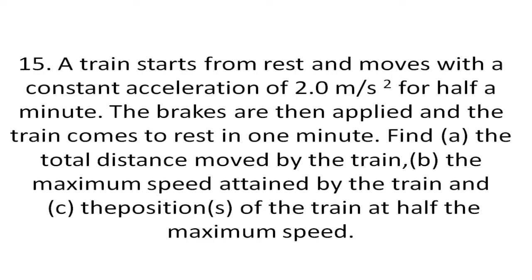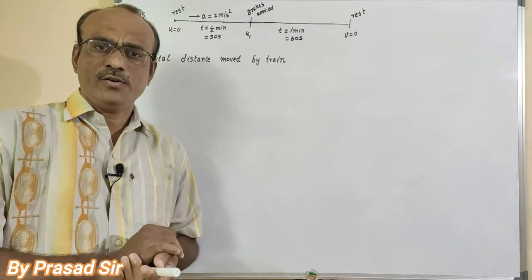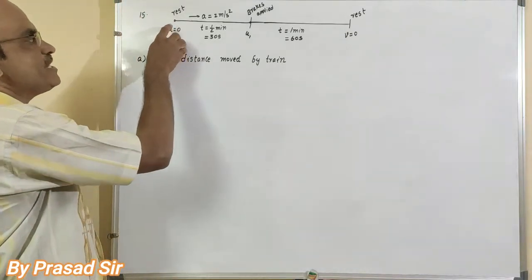Kinematics question number 15: A train starts from rest and moves with a constant acceleration of 2 meters per second squared for half a minute. The brakes are then applied and the train comes to rest in one minute. Find: (a) the total distance moved by the train, (b) the maximum speed attained by the train, (c) the positions of the train at half of the maximum speed.